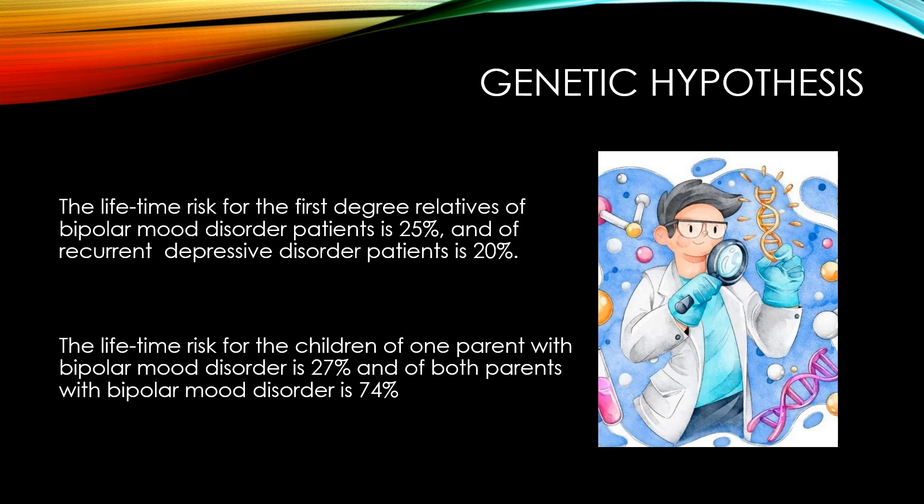An important point is the incidence in children, because patients will come and say they are getting married or thinking of having children and ask what the chances are. The lifetime risk for children with one parent having bipolar mood disorder is approximately 27%, but if both parents have it, the chances go up to 75%. Counselling the patient about these chances is very important because it is a genetic illness and genetic loading does increase the risk.